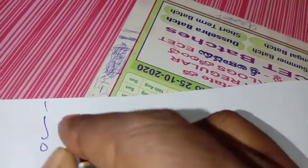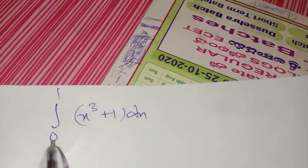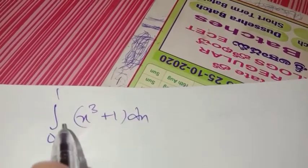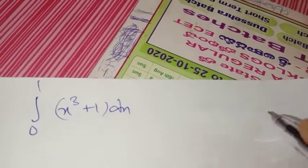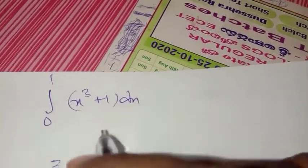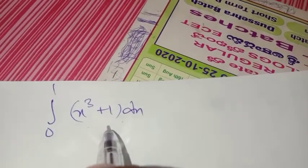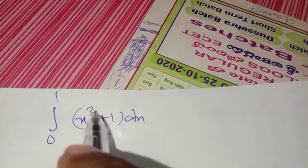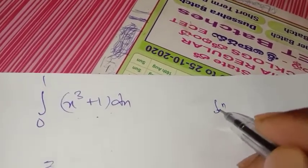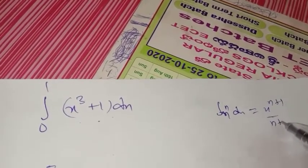Let us take the problem: ∫(x³+1)dx from 0 to 1. We split the two terms and apply the basic properties of integration, using the direct formula: ∫x to the power of n dx equals x to the power of n+1 by n+1.